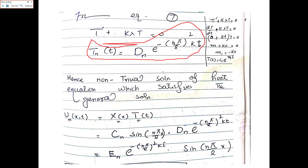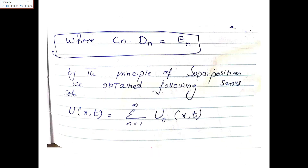Combining X_n and T_n, the solution u_n(x,t) = X(x)·T(t) = c_n·sin(nπx/l)·d_n·e^(−(nπ/l)²·k·t). The constants c_n and d_n are combined into a single new constant E_n. So u_n(x,t) = E_n·e^(−(nπ/l)²·k·t)·sin(nπx/l), where E_n = c_n·d_n.